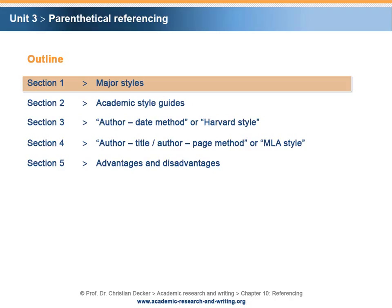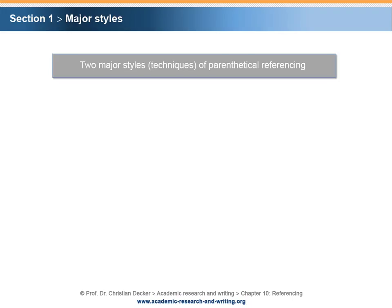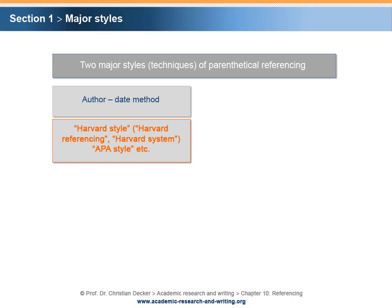Section 1 – Major Styles. There are two major styles and techniques of parenthetical referencing. The first major style is the Author-Date method, which refers to the style systems named Harvard style, sometimes also Harvard referencing or Harvard system, APA style, and others.